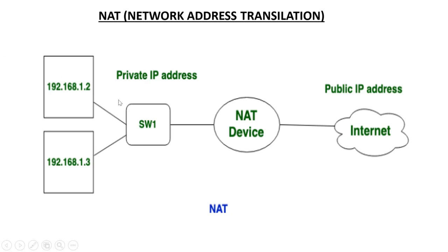Consider that in our company all the workstations are using private IP addresses, because public IP addresses are very costly and availability is very less. So we are using private IP addresses. But if our workstations need to connect to the internet, private IP addresses cannot be routed on the internet, so we need a public IP. This network address translation translates the private IP address to the public IP address in the router or firewall.